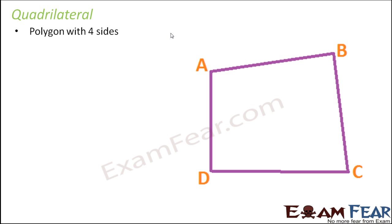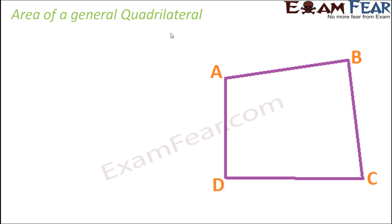How do we define a quadrilateral? It is a polygon with four sides. Any polygon with four sides is a quadrilateral. Here in this case ABCD is a quadrilateral. Let us learn how we find out the area of a general quadrilateral.